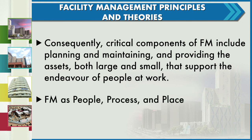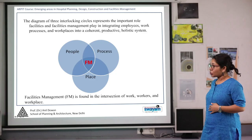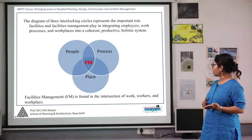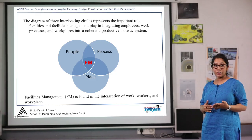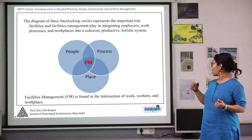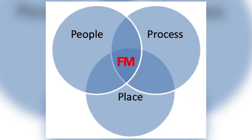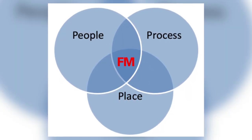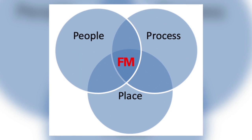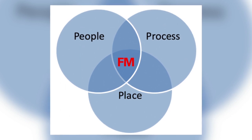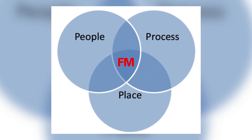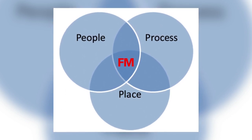This is a process which includes people, process, and place. The next slide shows a diagram of interlocking circles of people, process, and place. The intersection found between people, processes, and place is facility management.